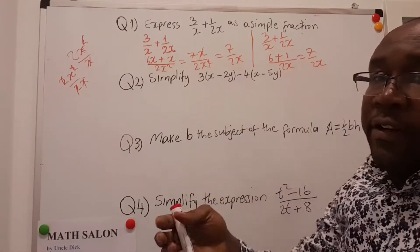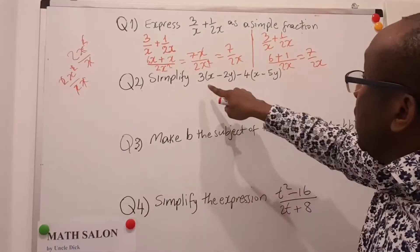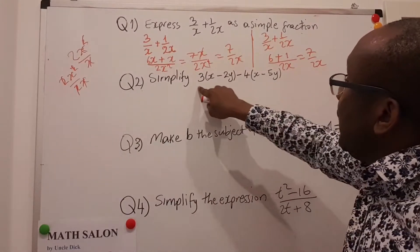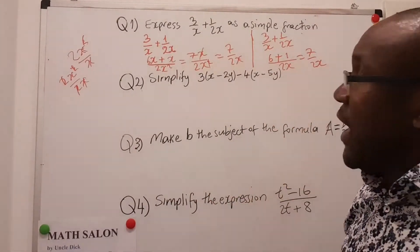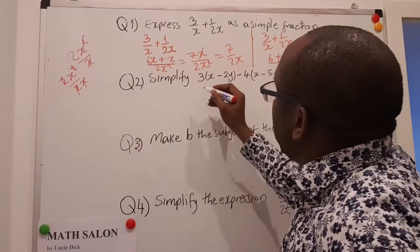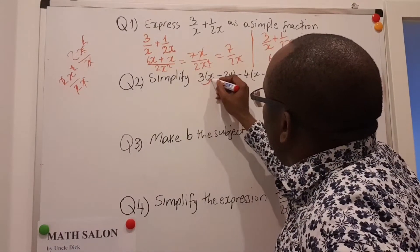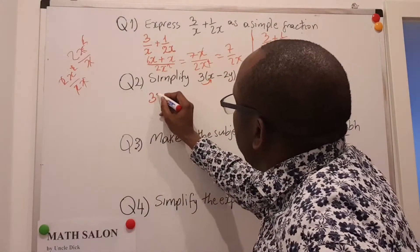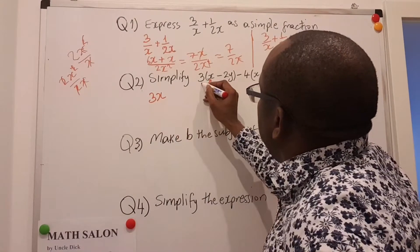So we also learned here in Form 1 or Form 2 how to expand and gather like terms together. So to do this, what we do is we take 3 multiplied by x, we get 3x. We take 3, we multiply by minus 2y.